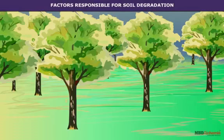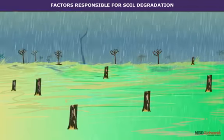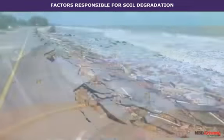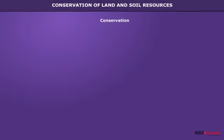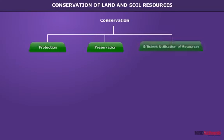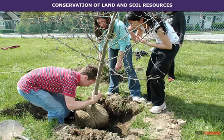Deforestation causes enormous loss to the basic properties of soil. Overgrazing, floods, and landslides also degrade the soils. Conservation of land and soil resources means protection, preservation, and efficient utilization of resources. Conservation is a human practice and has to be promoted rather than allowed to run on its own.